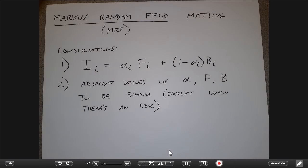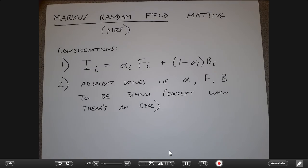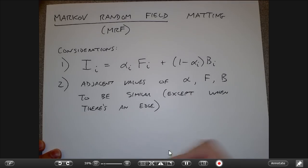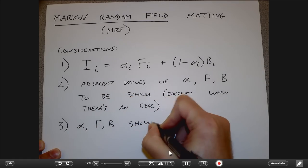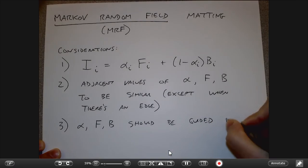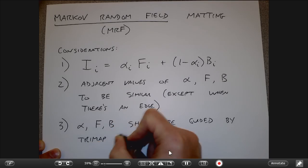That's like saying, when I have a very smooth region like this whiteboard behind me, I expect the alpha values of all these pixels to be more or less the same. However, from your perspective, there's a point where the white of the whiteboard transitions into the blue of my shirt. At that strong color edge, two adjacent pixels won't necessarily have similar alpha values. In general, we want pixels in the same neighborhood to have similar alpha values and also similar foreground and background values.